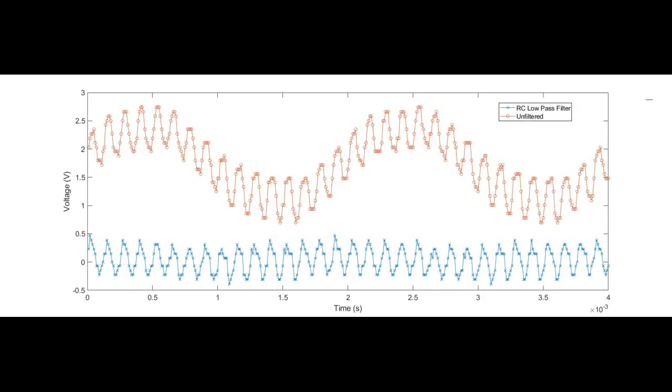Shown here is an example of the RC low-pass filter data taken from the oscilloscope. The precision of the data is limited by the sampling rate of the oscilloscope.